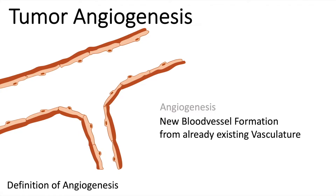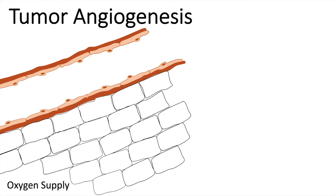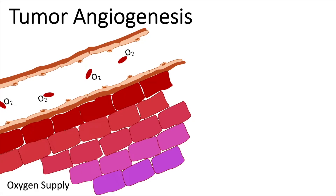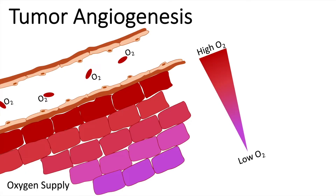When talking about tumor angiogenesis, we should introduce the concept of oxygen supply. Cells in close range to the blood vessel can take up oxygen which diffuses from the bloodstream into the cell area. However, there is a gradient — cells in close proximity receive higher oxygen, whereas cells at greater distance are supplied with less. We must keep in mind that oxygen diffusion through tissue is limited to a certain range.